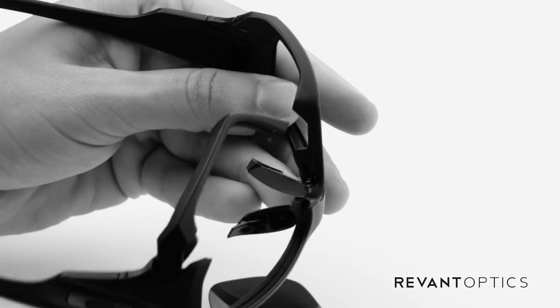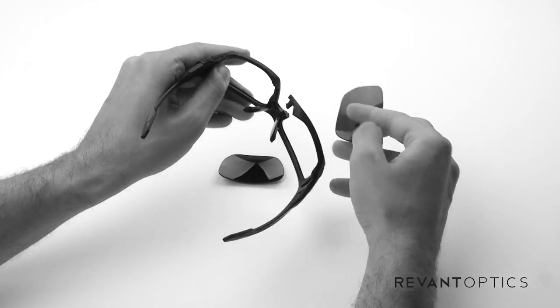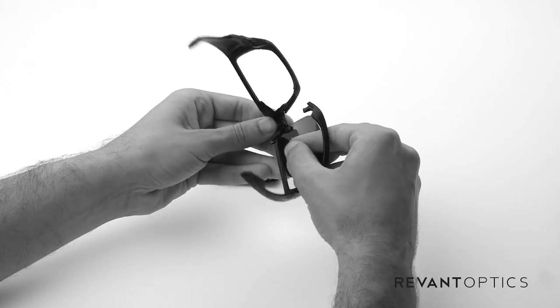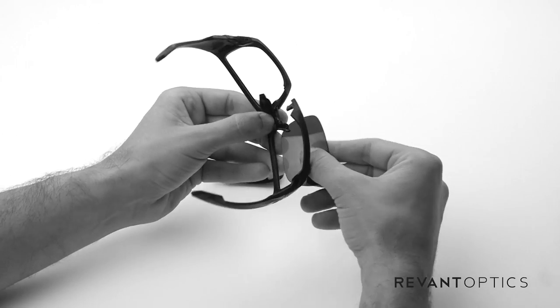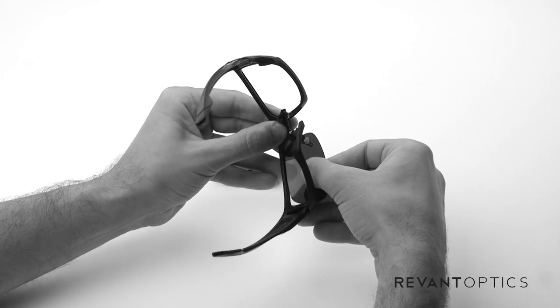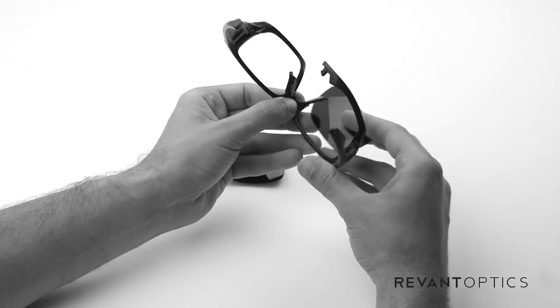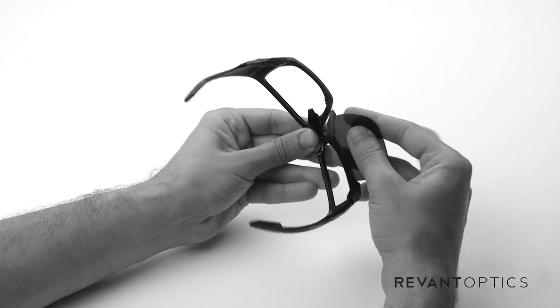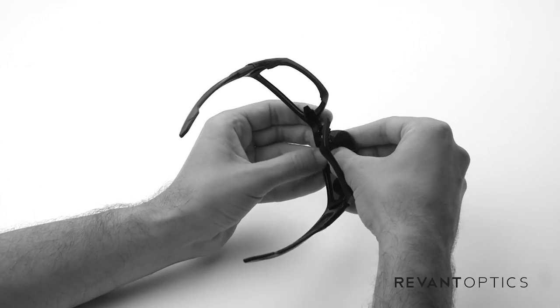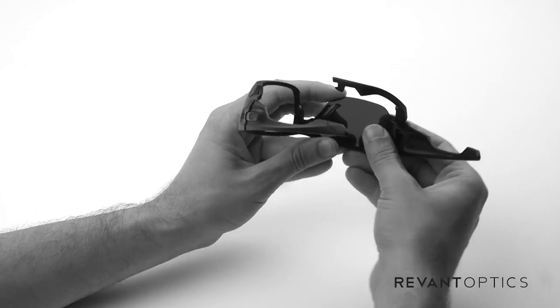When you're ready to install your lenses, again I like to leave it upside down just because it's easier to do this and they seat nicely in there. So you go ahead and slide the lens into the groove on the correct side of the frame.